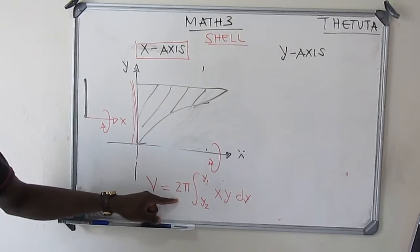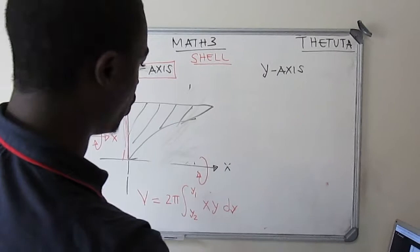In the case where the body revolves on the x-axis and also rotates on the x-axis, you cannot apply shell method — you apply the disk method.